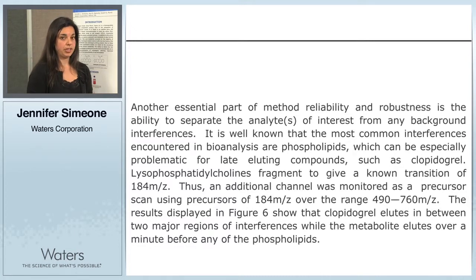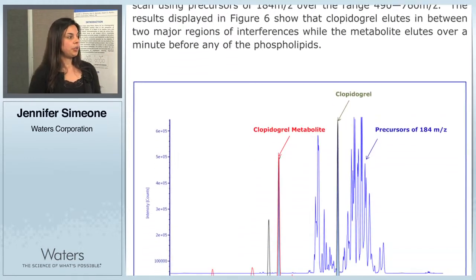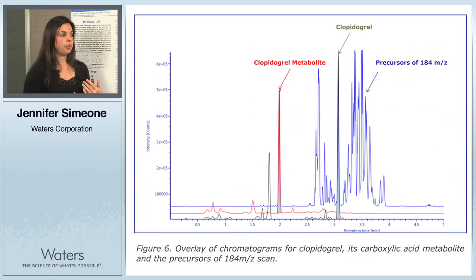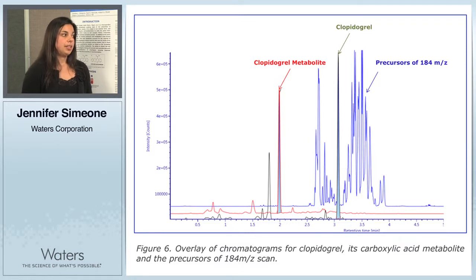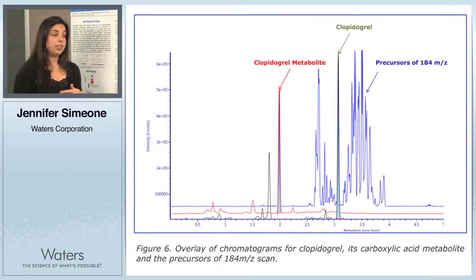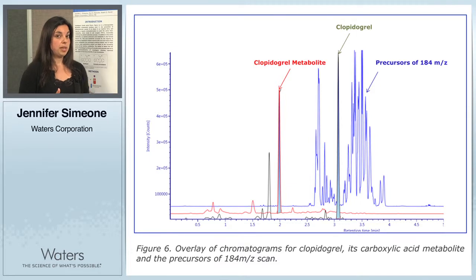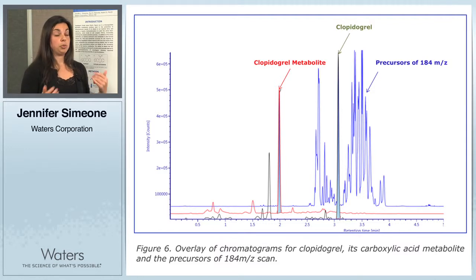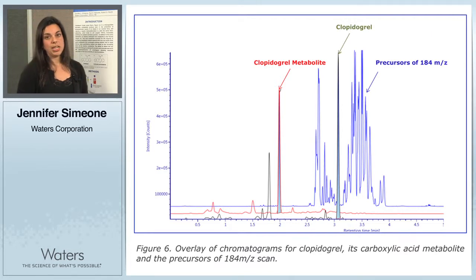An easy way to monitor for these is to do a precursor scan of the common 184 m/z fragment. In figure six, it's an overlay of the Clopidogrel and its metabolite, with the precursor scan for the 184 m/z in the background. You can see that the Clopidogrel metabolite elutes much earlier than the phospholipids. Plavix, on the other hand, is in a region susceptible to matrix interferences, but the LC method was modified so that it elutes in between two larger regions of phospholipids. In this way, we have successfully separated both analytes from the phospholipids, generating a much more reliable method.